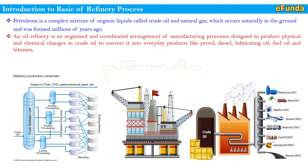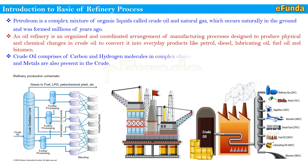Crude oil comprises carbon and hydrogen molecules in complex chains. In addition, impurities like sulfur, nitrogen, and metals are also present in crude oil. This is the reason crude oil plays a critical role, and refinery processes help to get byproducts for consumer needs and accordingly process things.